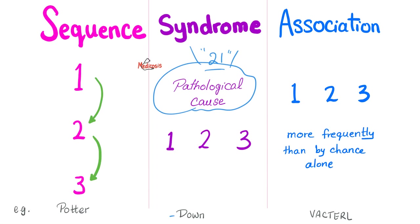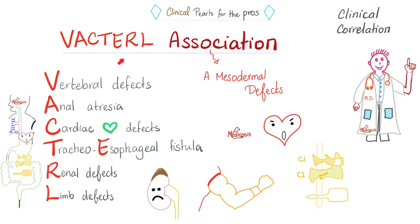How about an Association? Multiple findings — 1, 2, 3, 4, 5 — happen together for no apparent reason. They cluster together like birds of a feather; they flock together. Why? What's the mechanism? What's the gene? We have no idea. And this is the story of the VACTERL Association. Why would vertebral defects come with renal defects and tracheoesophageal fistula? We have no idea — not the slightest.